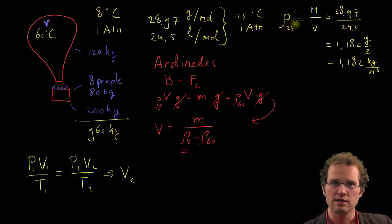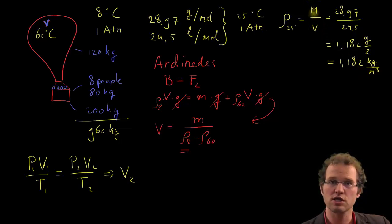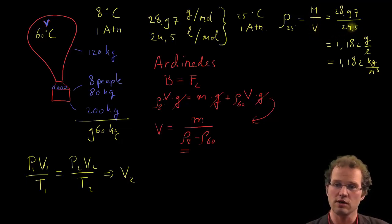So if we have the air density at 25 degrees, we can derive the air density at 8 degrees, if we know how much the volume changes, because mass doesn't change. If we heat up air, the mass doesn't change.